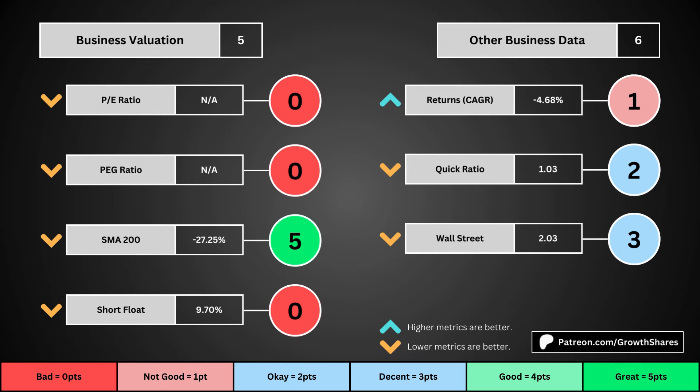The fourth set of metrics looks into other relevant data. First is the stock's performance over a set period of time — usually 10 years, but if the stock doesn't go that far back, we go with the earliest data up to 10 years. The quick ratio is basically how easy it is for the business to pay off its short-term obligations; we want that high so that it's easy to get rid of those debts. And Wall Street is the average consensus rating Wall Street analysts give the stock, from a strong buy of 1 to a strong sell of 5. The better values get a higher point total.